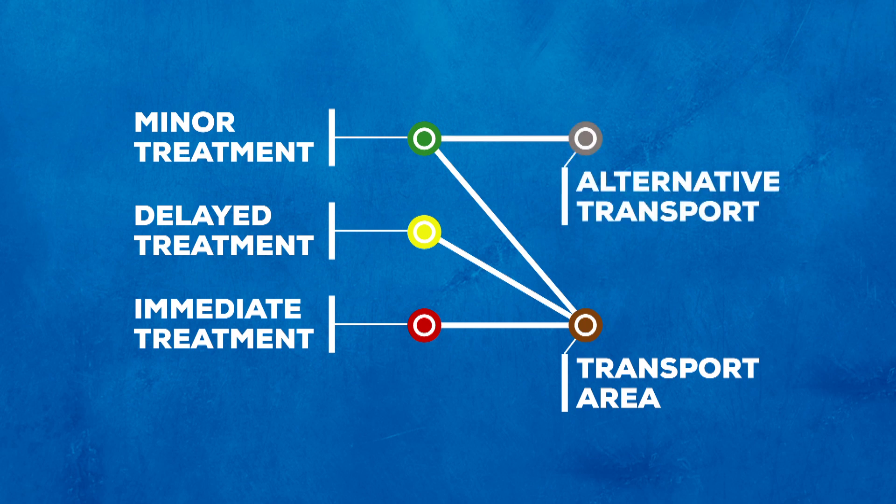The alternative transport area, when needed, is where minor category patients can be loaded onto non-medical vehicles such as vans and buses for mass transportation to another location, such as a hospital or temporary shelter. At least one BLS level provider must accompany the alternative transportation vehicle, but the alternative transport area does not require continuous staffing.